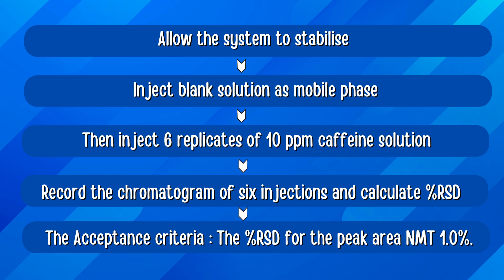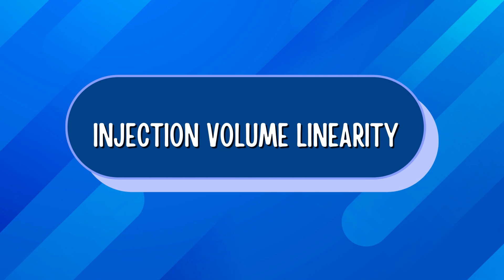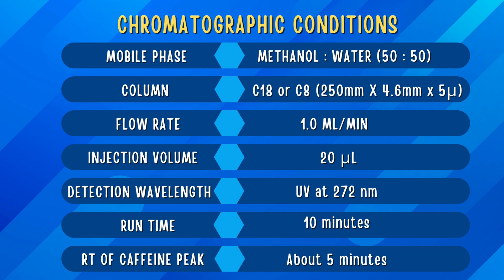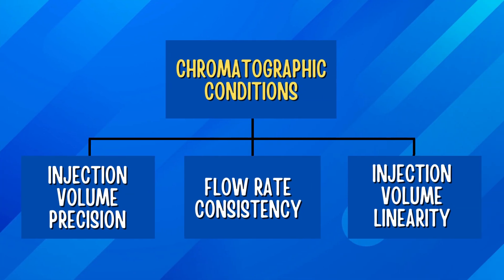The acceptance criteria is the percentage RSD for the peak area of caffeine should not be more than 1.0%. Now in the third parameter, we will understand how to perform injection volume linearity. The chromatographic conditions are the same as required for injection volume precision and flow rate consistency, so we can club these three parameters together or perform them individually.